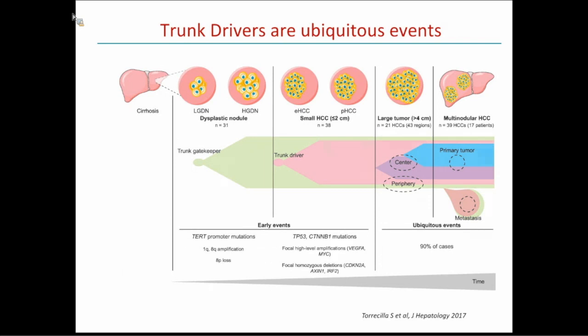Moving to molecular drivers: this is the most common path for HCC coming from cirrhosis. Patients develop low-grade dysplastic nodules, then high-grade dysplastic nodules, then early HCC, and then large or multinodular disseminated disease. At the level of low- and high-grade nodules, there are several hits we call gatekeepers — they happen there, do not suffice to develop HCC, but are already present. The most common is TERT promoter mutations in 25% of patients. There are also copy number variations — amplifications of 1q, 8q, and so on.